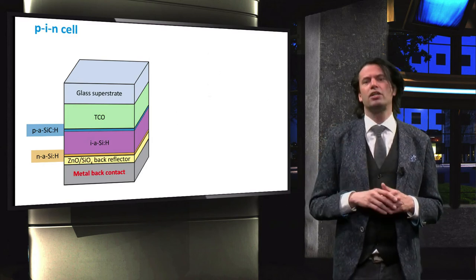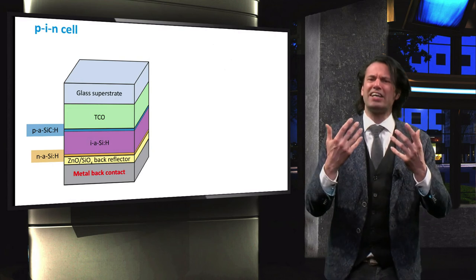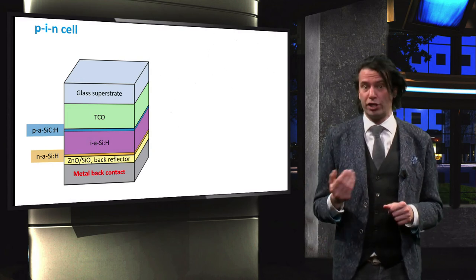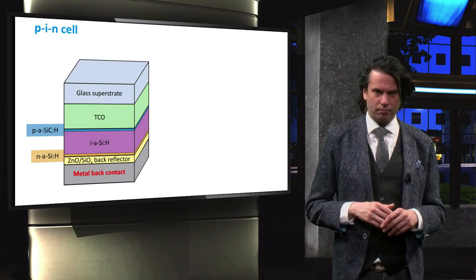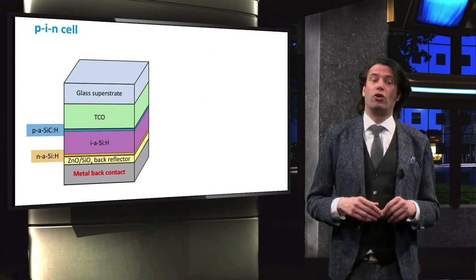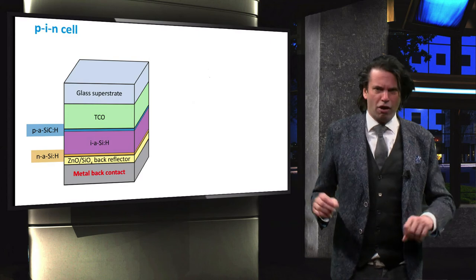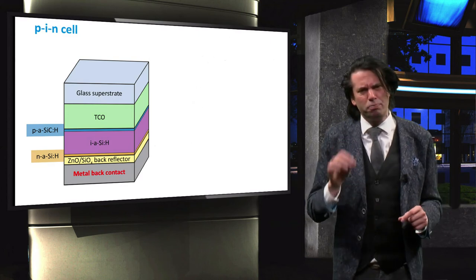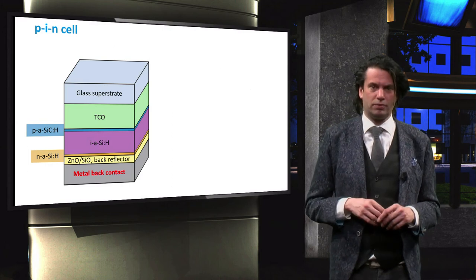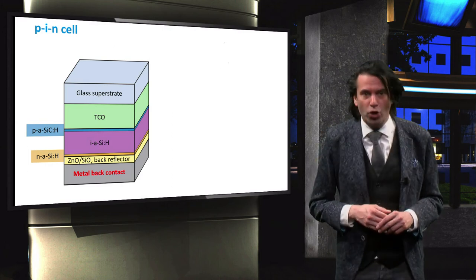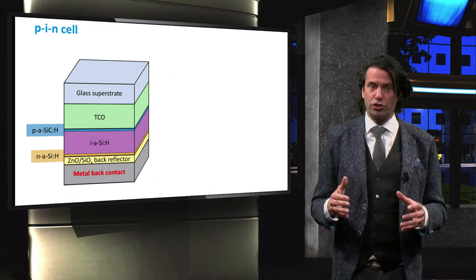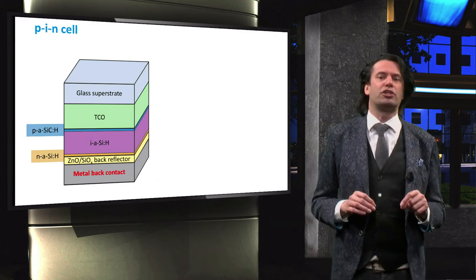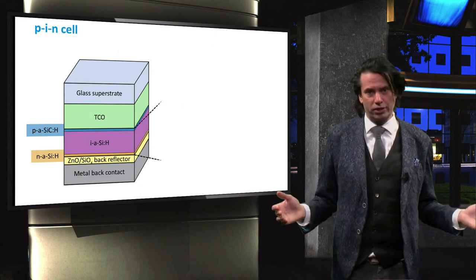The doped amorphous silicon layers have a high defect density and therefore an extremely small diffusion length for its majority charge carriers. As a consequence, unlike traditional solar cells, photogenerated charge carriers in the doped layers of a p-i-n cell cannot be separated and collected. Light absorption in the doped layers is therefore considered to be parasitic, and it does not contribute to the generation of a current.